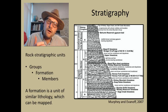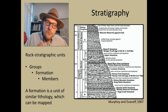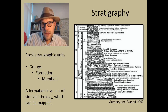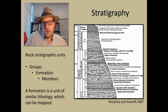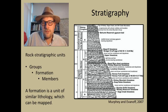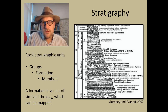You may have heard the terms groups, formations, and members. A formation in geological terms is a unit or body of rock with similar lithology that can be mapped on a geological map. Groups are collections of formations, while formations can be split into individual members that may have unique lithologies or characteristics. The fundamental principle is that the rock type — the lithology — is different and can be mapped on the surface.